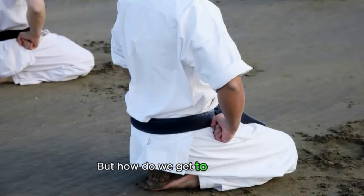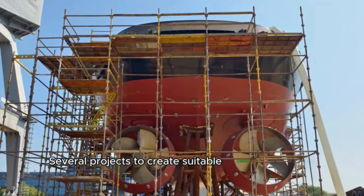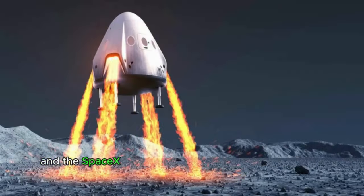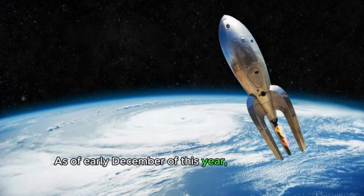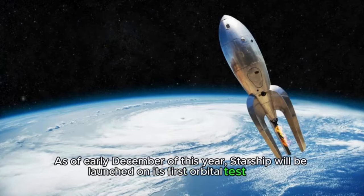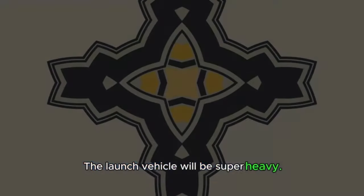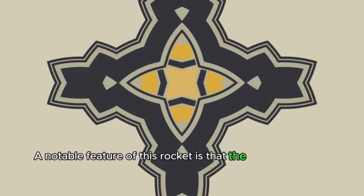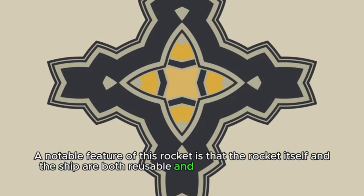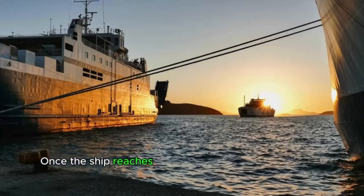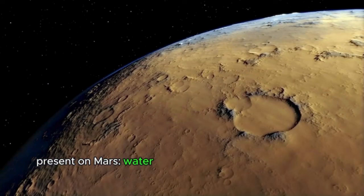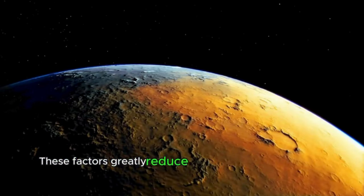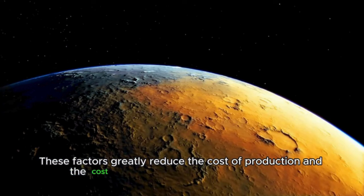But how do we get to this planet? Several projects to create suitable vessels are being developed as we speak, and the SpaceX Starship is currently leading in terms of progress. As of early December of this year, Starship will be launched on its first orbital test flight. The launch vehicle will be super heavy. A notable feature of this rocket is that the rocket itself and the ship are both reusable and can be refueled in Earth's orbit. Once the ship reaches its destination, it can be refueled using the natural resources present on Mars, water and carbon dioxide, which is very convenient for us. These factors greatly reduce the cost of production and the cost of transporting goods, respectively.